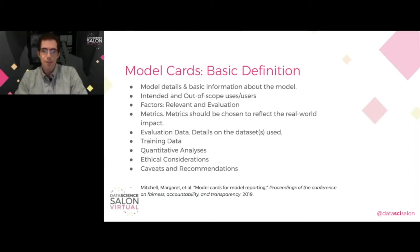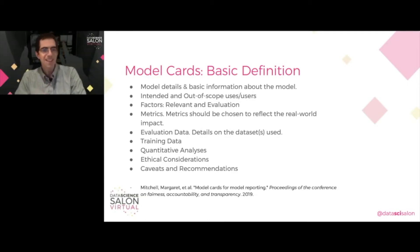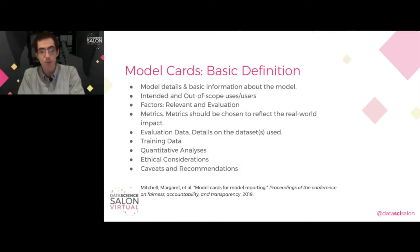Each one of these bullets should be filled out by the owner of the model and published, ideally publicly. So what are we talking about? It's a document that answers the questions: what is the model, how should it be used, and given how it should be used, what groups of people has the model been evaluated and tested against to double-check that it is not generating unfair outcomes?